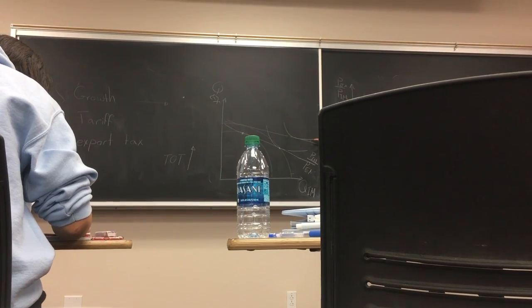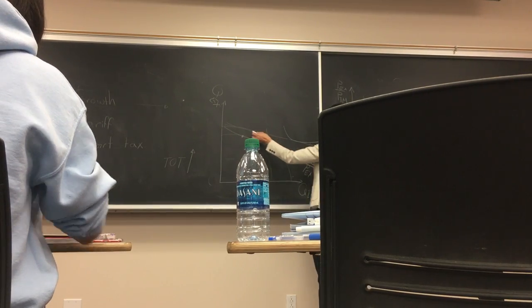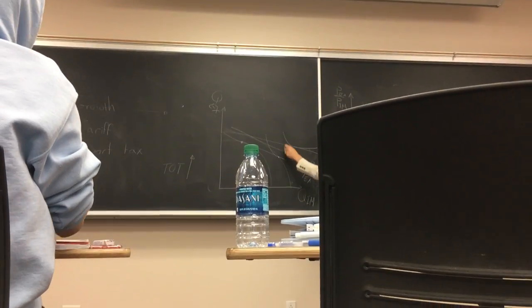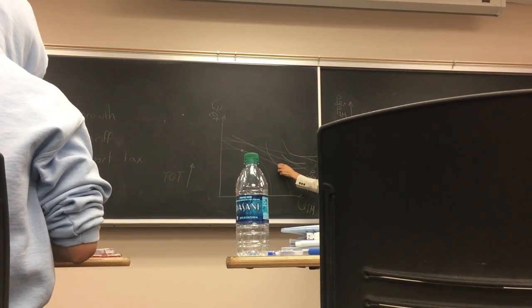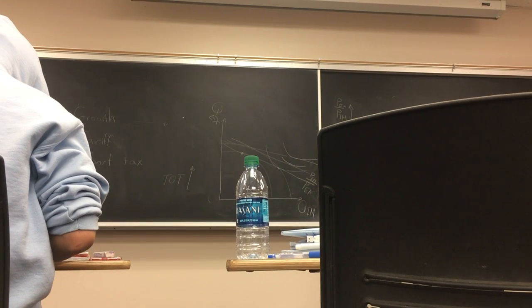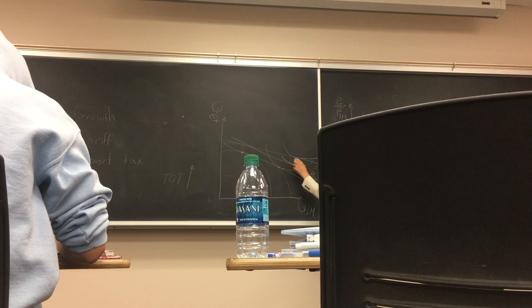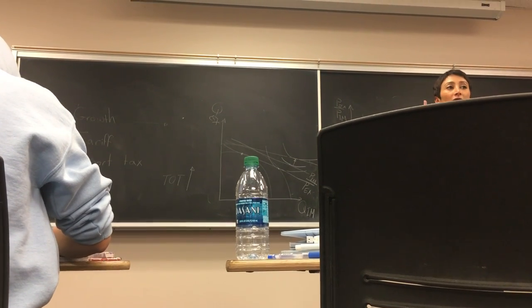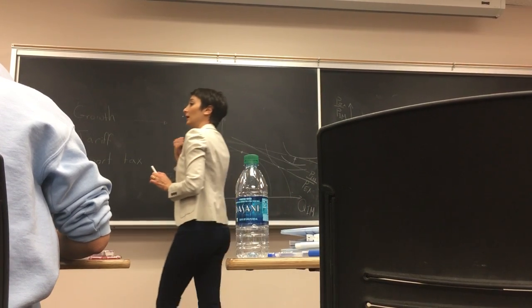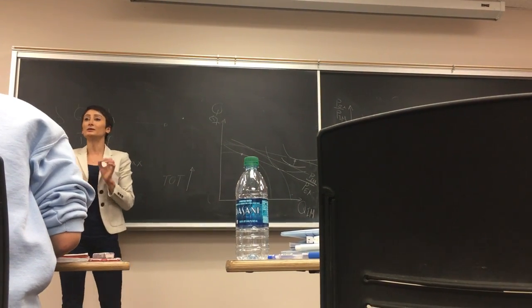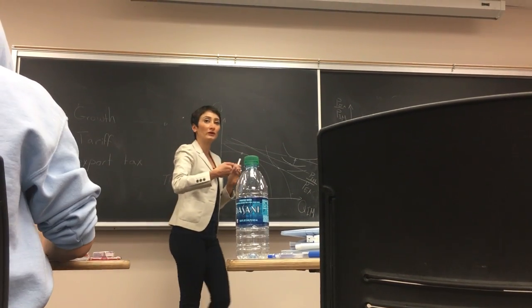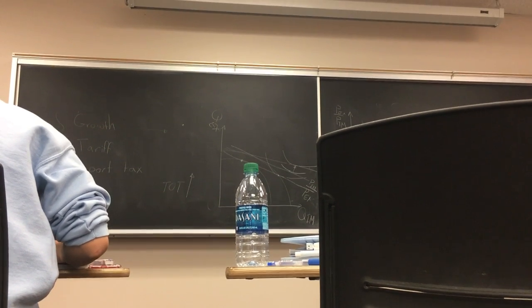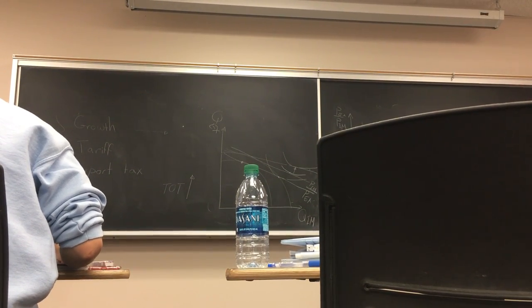There are two things happening. One is the expansion of the production possibility frontier, which is good by itself. The other is that the budget constraint is getting even flatter because terms of trade increases, putting you on a higher indifference curve. If I want to remove the terms of trade effect, I draw a line parallel to the original price line. The movement from here to here is only due to growth; the rest is due to change in terms of trade. This is because you have a bias toward what you're importing.